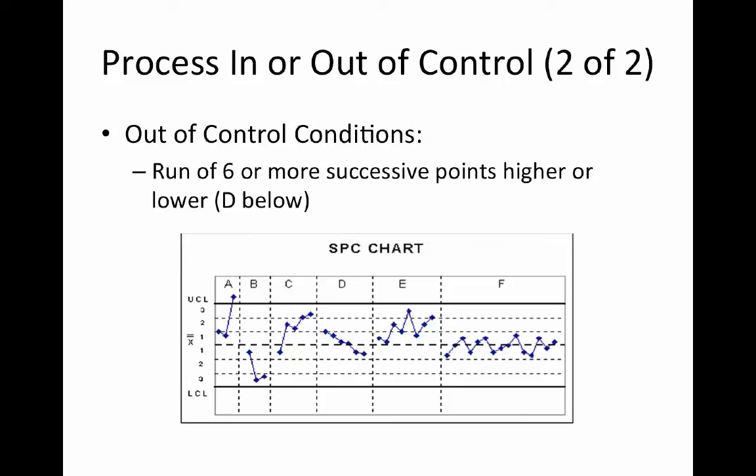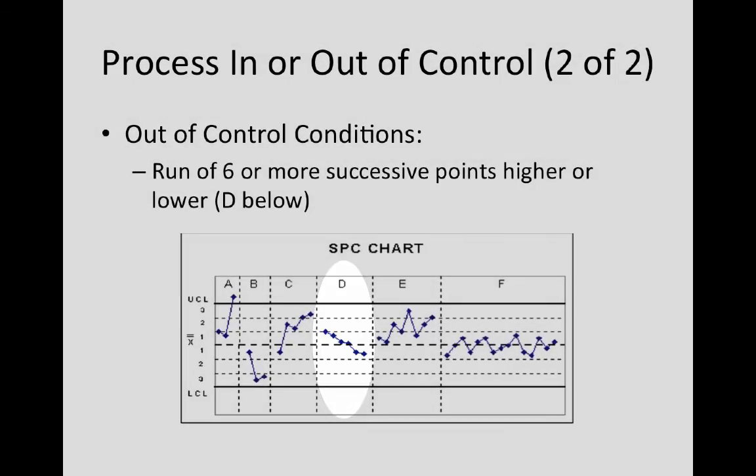So here's another example in D where you have a run of six or more successive points. There's others. You can see F is a pattern up, down, up, down. That would indicate that it's out of control, a consistent pattern over a period of time. So there's others, but the most common are the ones that I covered.